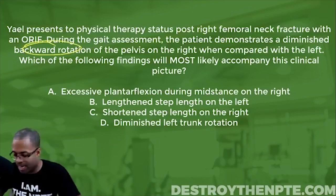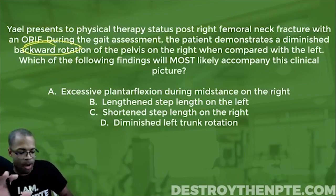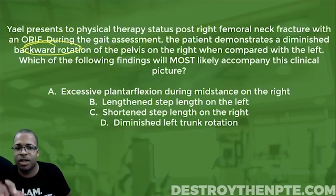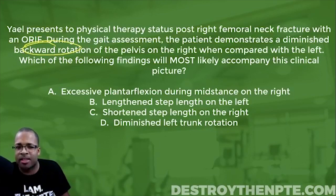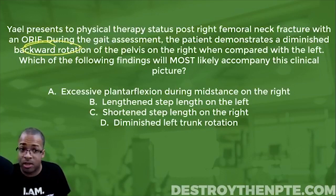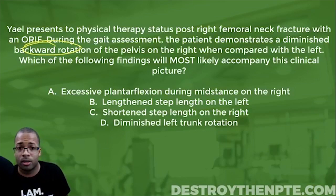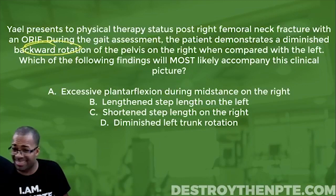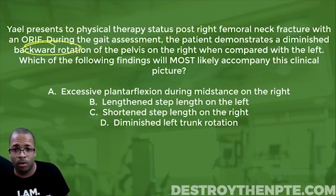Before we look at the answer choices, we have to understand why backward rotation is even important. During gait, you need to know when your patient is supposed to be doing backward rotation. Backward rotation is most important during terminal stance on that side. So what this question is really telling you is that Jael is having problems with terminal stance on the right — she's not able to fully achieve terminal stance.